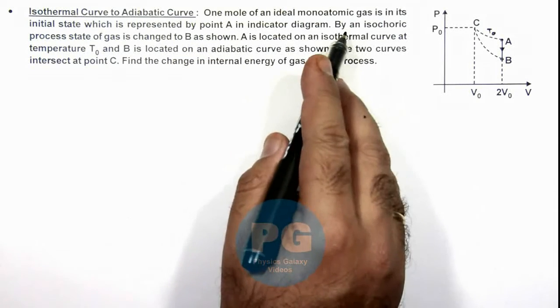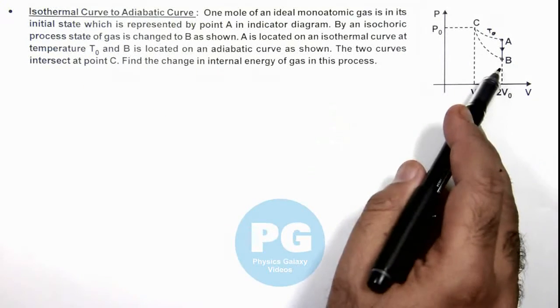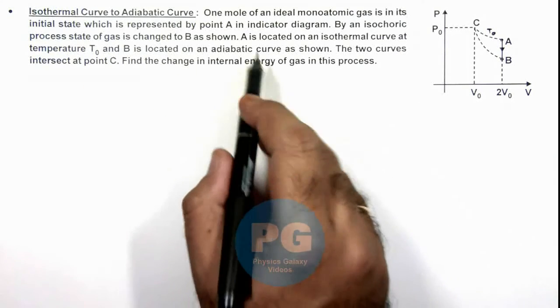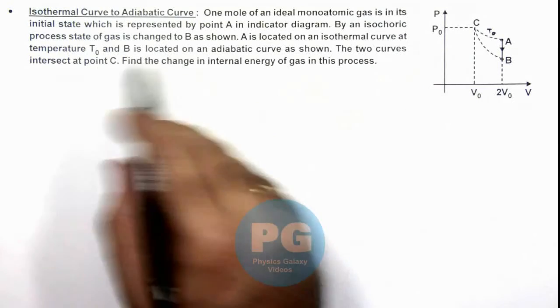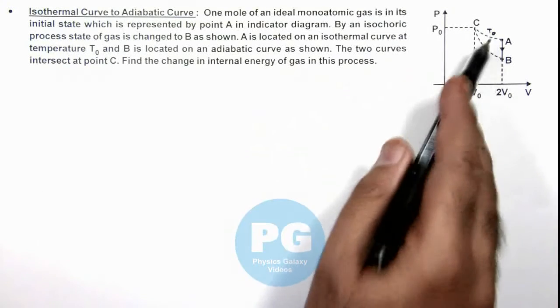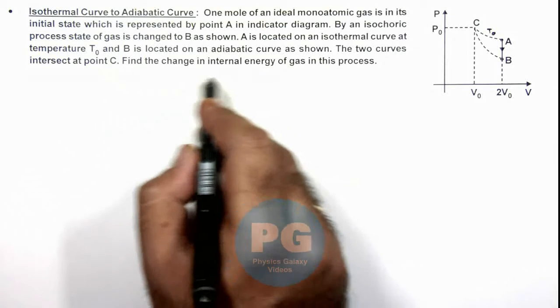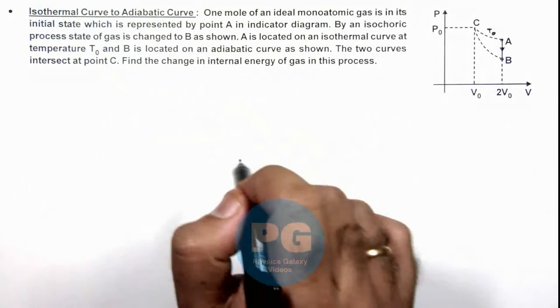By an isochoric process, the state of gas is changed to B, as shown in the figure. A is located on an isothermal curve at temperature T₀ and B is located on an adiabatic curve. The two curves intersect at point C. We are required to find the change in internal energy of gas in this process.